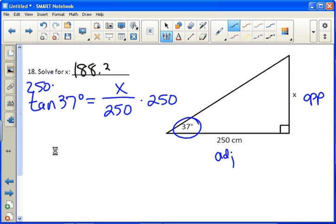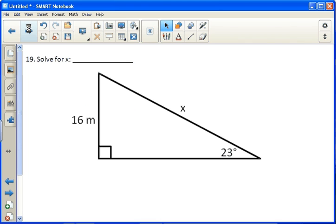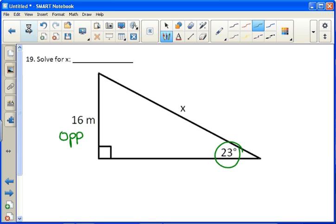For 19, same type of process. Given this angle, this is our opposite side, and this is our hypotenuse. Sine is the thing that uses opposite hypotenuse. So I can set up the sine of 23 degrees equals the opposite over the hypotenuse.